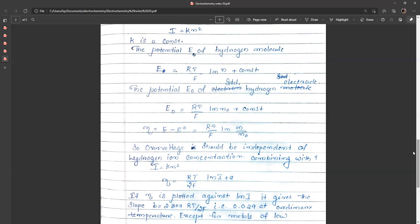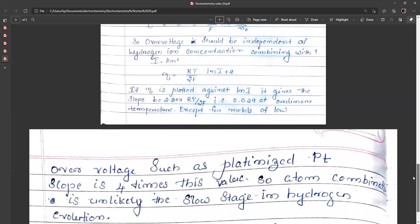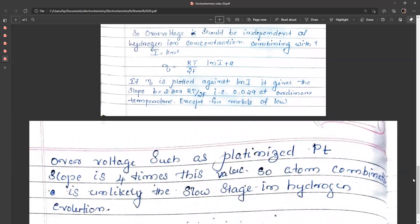When it is plotted against log i, it gives a slope equal to 2.303 RT by 2F, that is 0.029 at ordinary temperature except for metals of low overvoltage such as platinum. For platinum, the slope is 4 times this value. The experimental slope is 4 times 0.029. And so atom combination is unlikely the slow stage in hydrogen evolution.